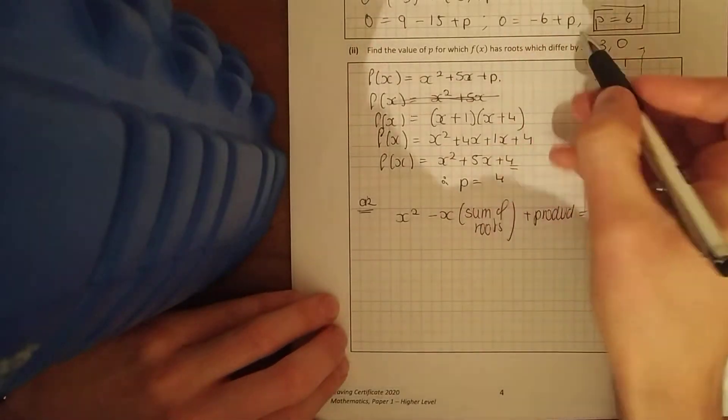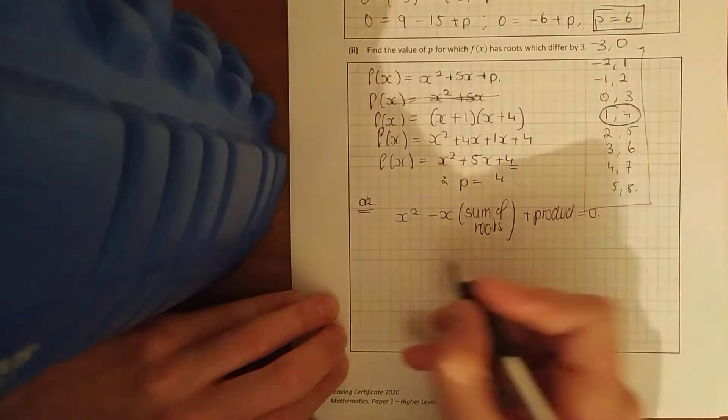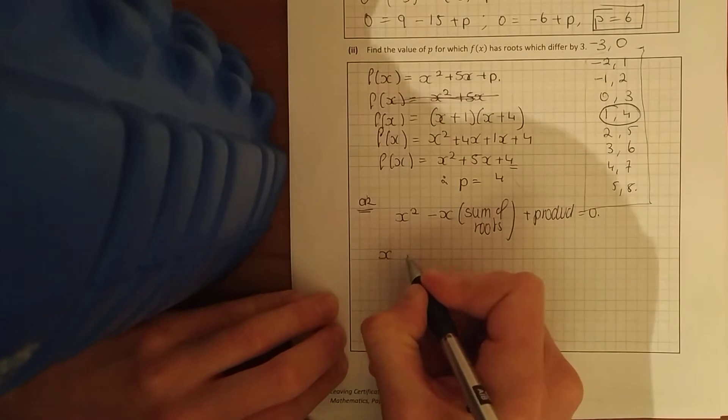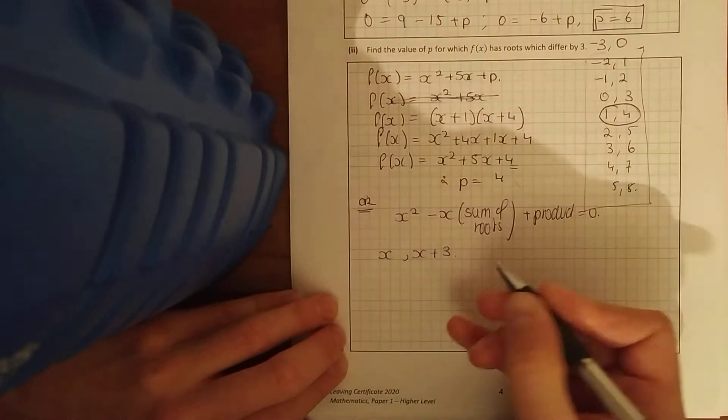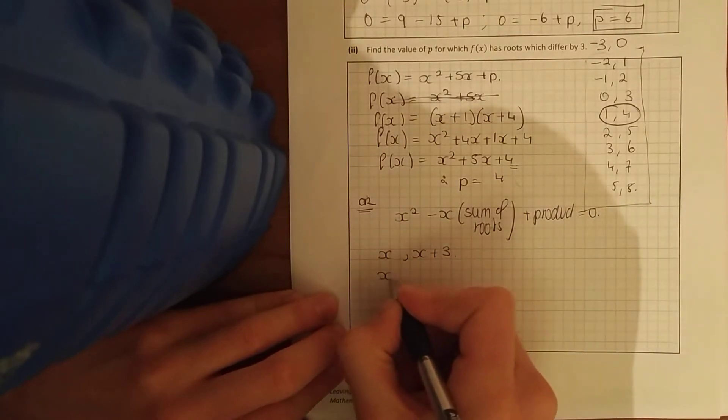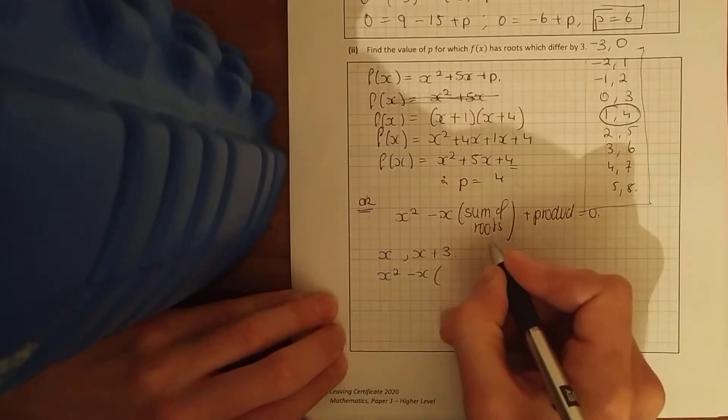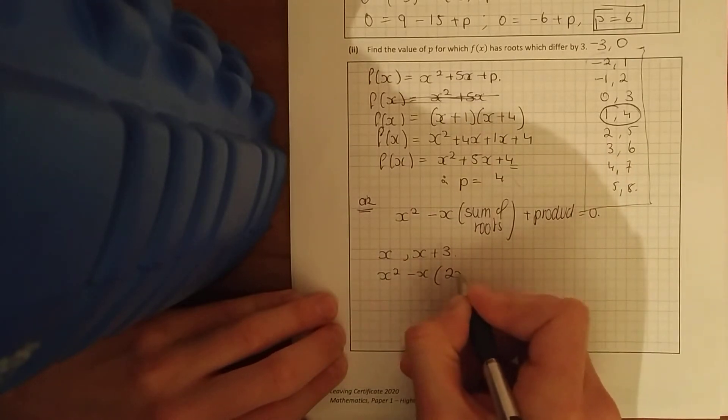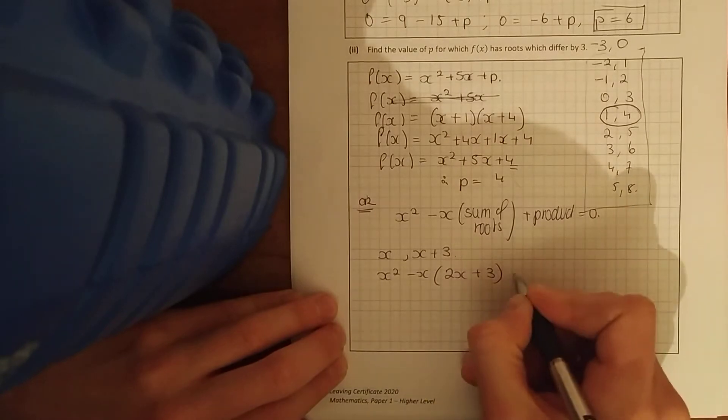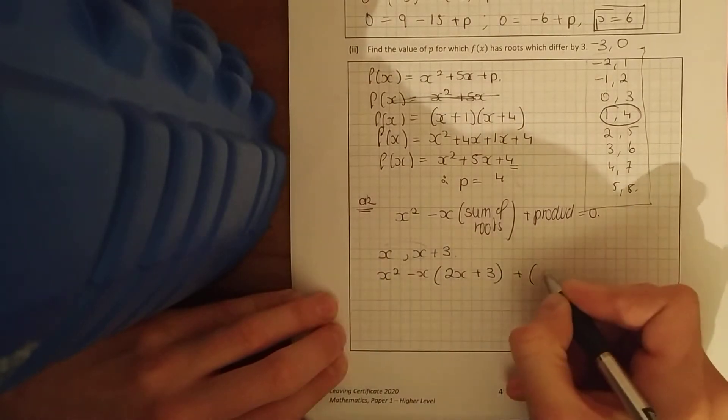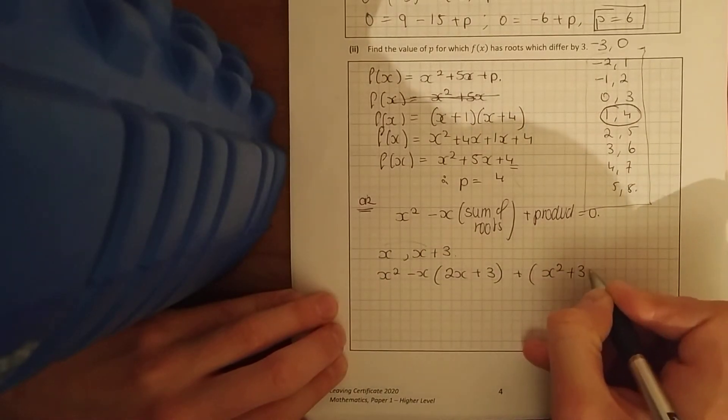And here it says they differ by 3, so if one root was x the other root would be x plus 3. So if I'm following that, x squared minus x times the sum of the roots, I get 2x. Sum just means add together: 2x plus 3, plus the product means multiply them, x squared plus 3x.